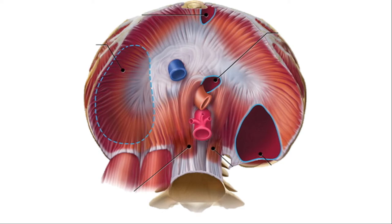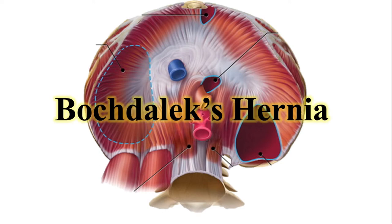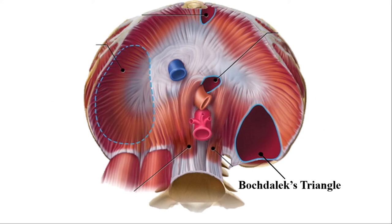The Bochdalek hernia is the most common manifestation of CDH, accounting for more than 95% of all CDH cases. It takes place through the Bochdalek triangle, which is situated between the lumbar origin and the costal origin of the diaphragm. The diaphragm has three origins: the sternal origin, the costal origin, and the lumbar origin.